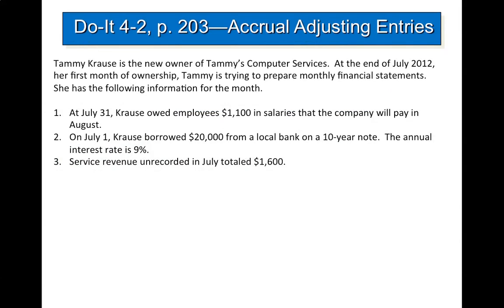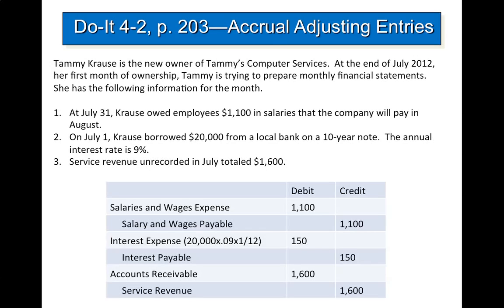Let's look at Do It 4-2 on page 203. Tammy Kraus is the new owner of Tammy's Computer Services. At the end of July 2012, her first month of ownership, Tammy is trying to prepare monthly financial statements. At July 31, Kraus owed employees $1,100 in salaries that the company will pay in August. You would debit salaries and wages expense for $1,100 and credit salaries and wages payable for $1,100.